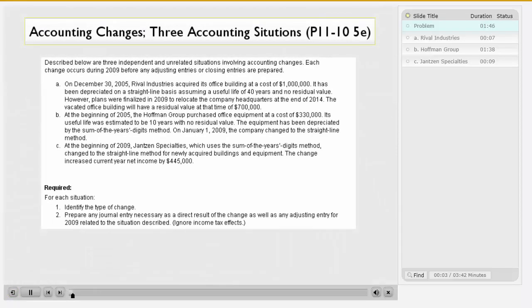Described below are three independent and unrelated situations involving accounting changes. Each change occurs during 2009 before any adjusting entries or closing entries are prepared.